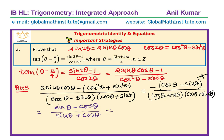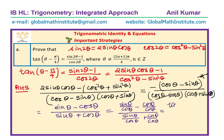We divide both numerator and denominator by cos θ. The numerator becomes sin θ / cos θ - 1, and the denominator becomes sin θ / cos θ + 1, which gives us (tan θ - 1) over (tan θ + 1).